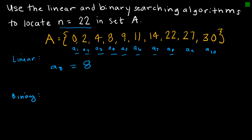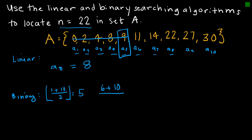Using the binary search algorithm, my left endpoint is one and my right endpoint is ten. The floor of one plus ten divided by two is the floor of 5.5, which is 5, so I start at a sub five. Since 22 is greater than the value at a sub five, I eliminate the left portion. Now my left endpoint is 6 and my right endpoint is 10. I divide six plus ten by two to get 8, and looking at a sub eight I've found 22. My output is 8.